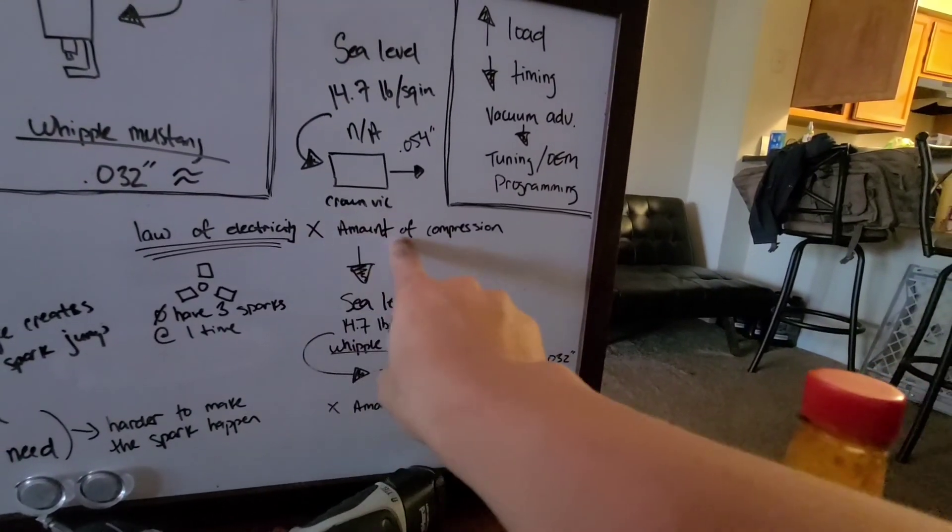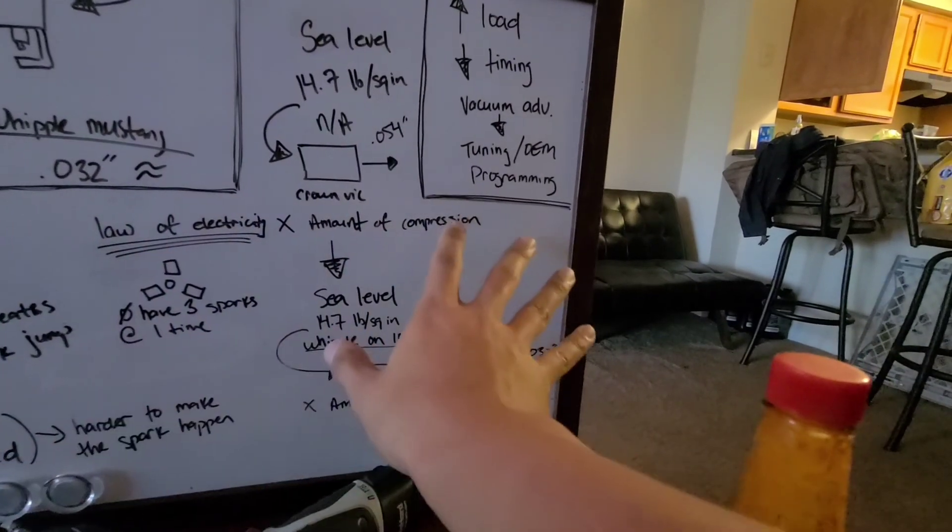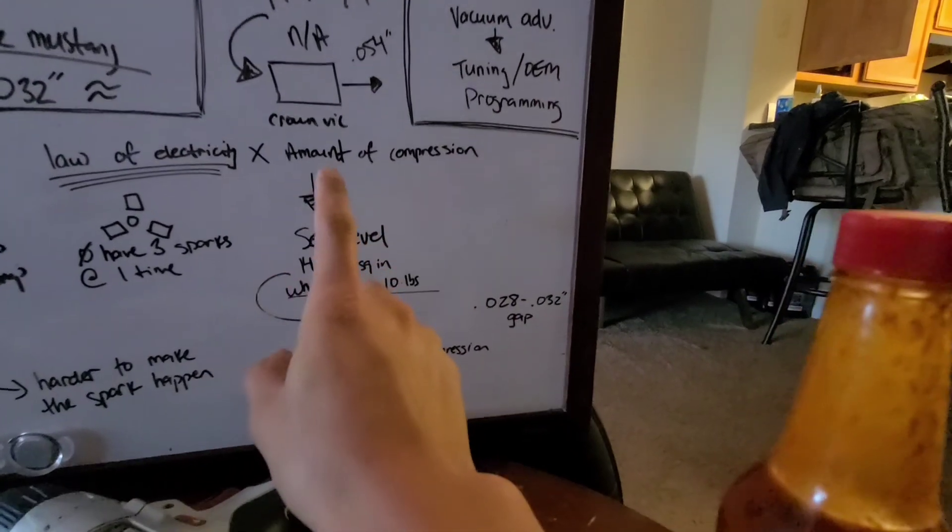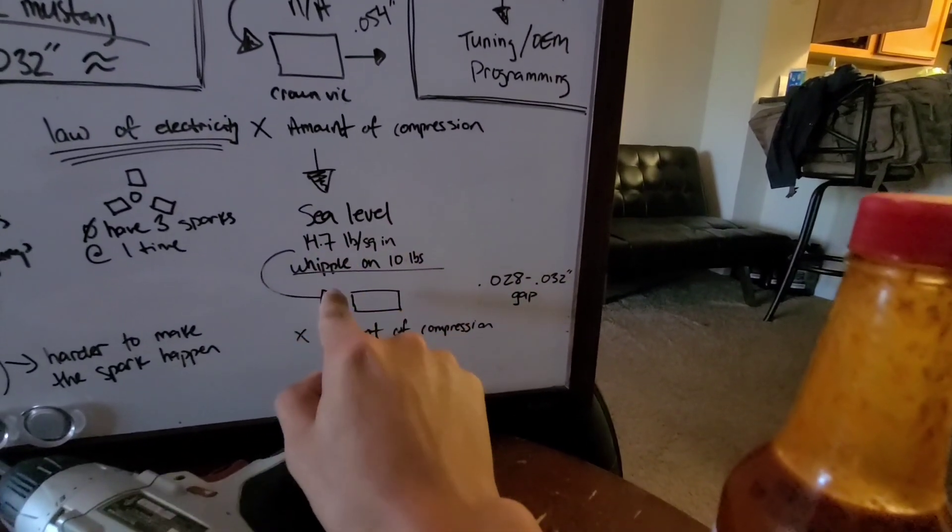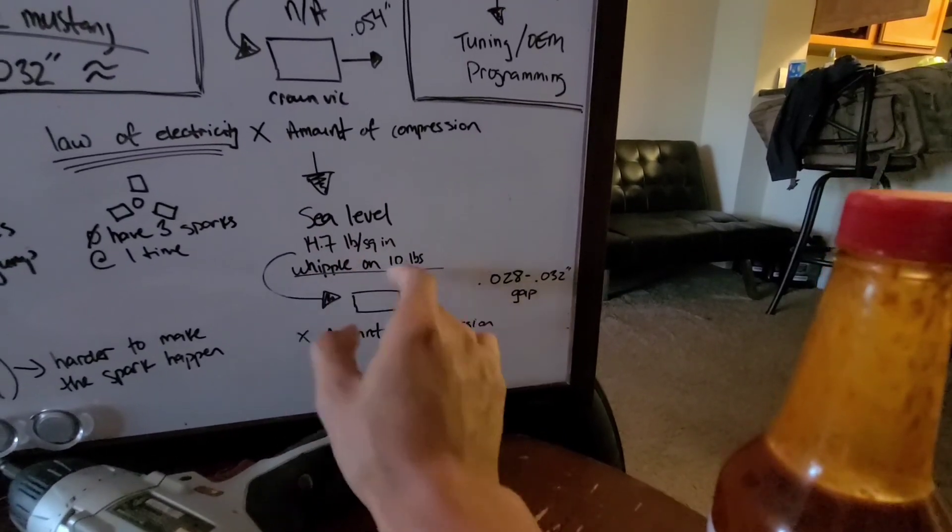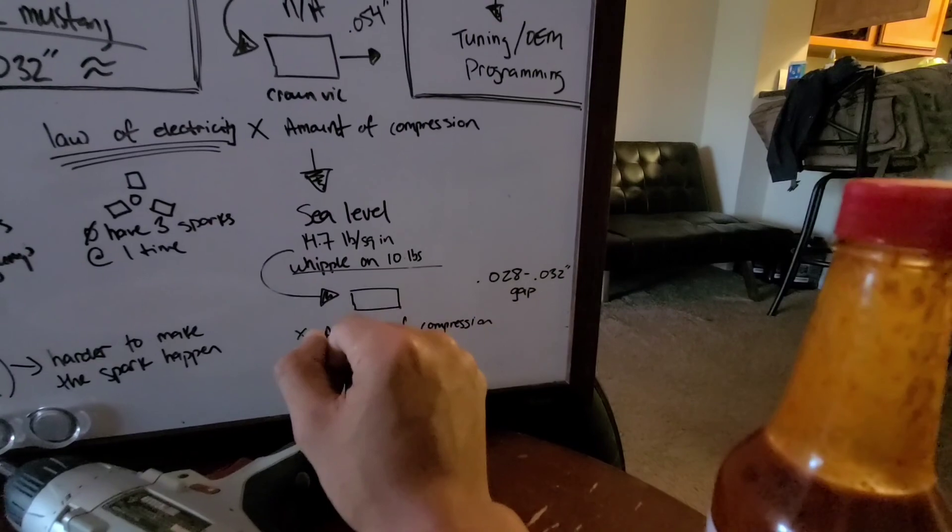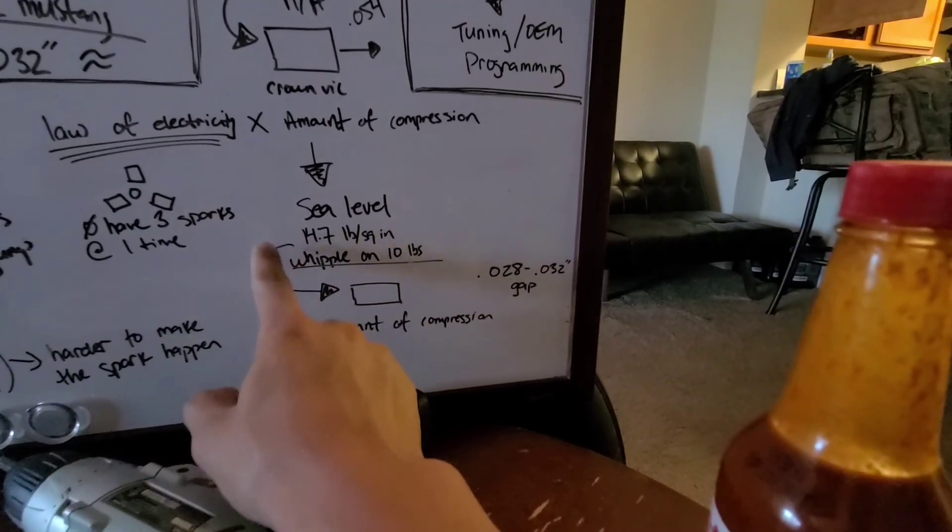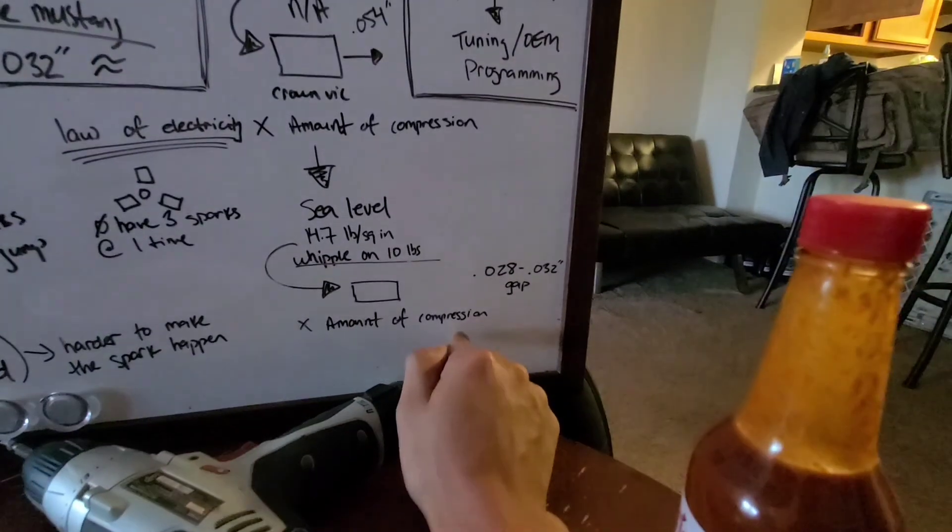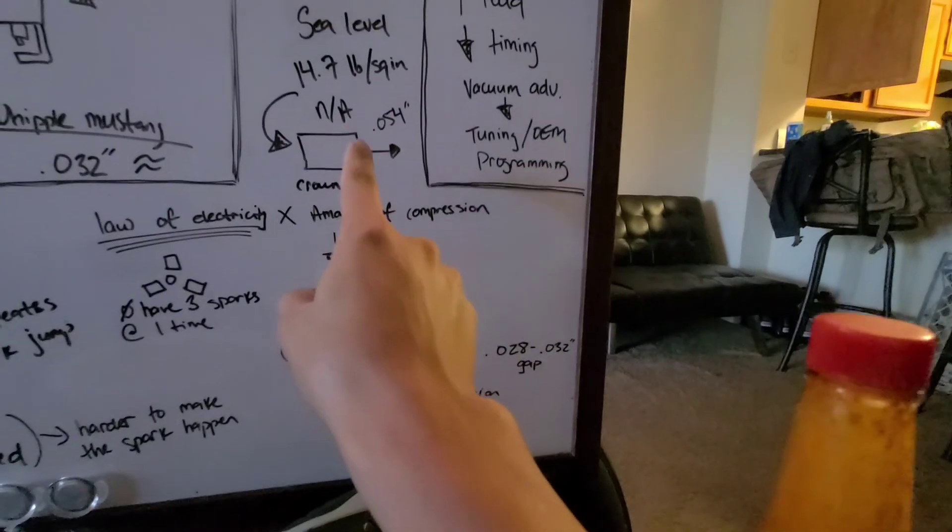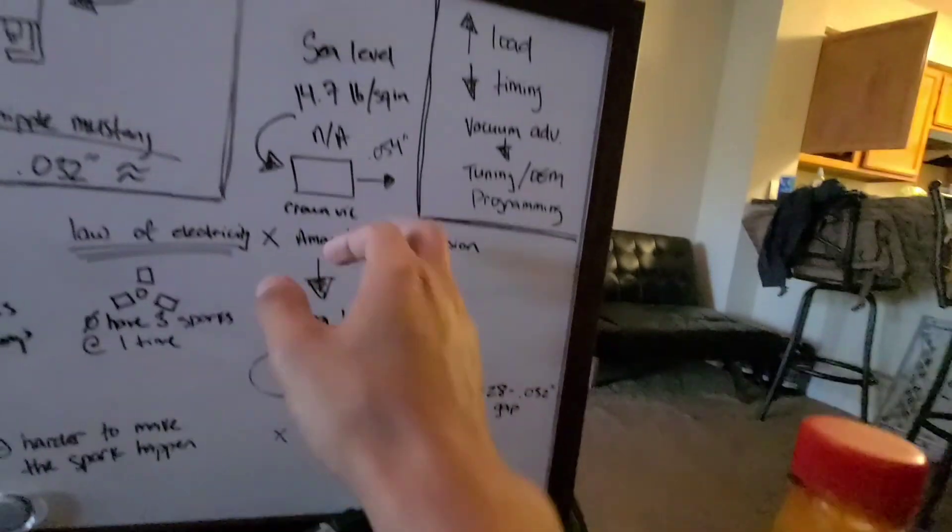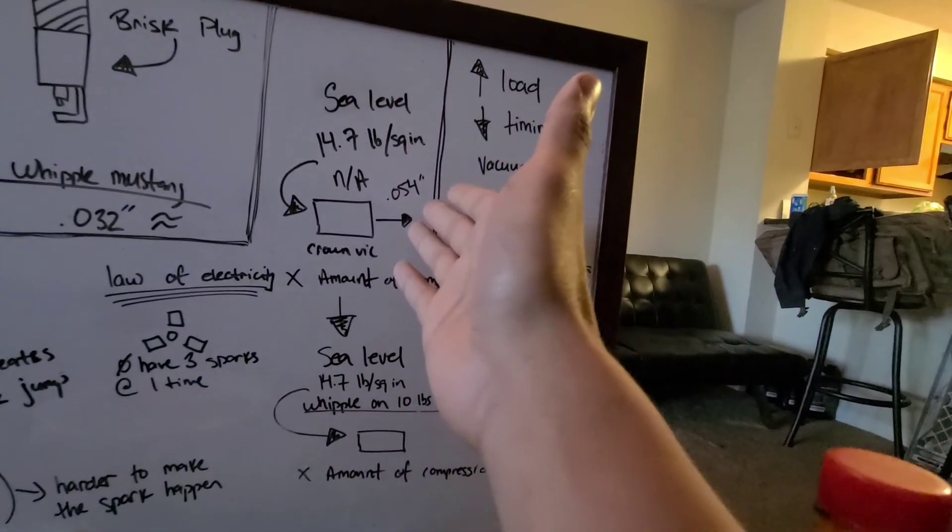This is why when you see racers refer to DA levels, negative DA, positive DA, it refers to this number. At sea level, 14.7 pounds per square inch are surrounding us at all times. Naturally aspirated Crown Vic, 54 thousandths. Very efficient setup. It's going to burn the gas no problem, run smooth, have a good clean idle. It's fine. So this is X amount of compression. Sea level, again, Whipple, 10 pounds. 10 pounds above this is when you refer to 10 pounds, this is 10 pounds above ambient pressure, 14.7 pounds per square inch. You are forcing that into the motor.